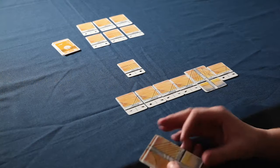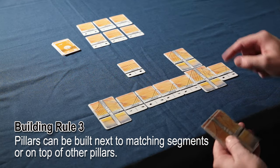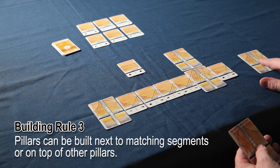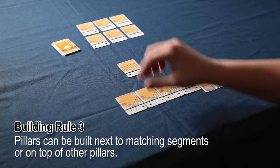To attach the suspension card, you need a pillar card to start it. You can attach new pillars to matching bridge segments, or you can build them on top of other pillars starting a new level, but you cannot start a new pillar that isn't attached to the existing bridge.